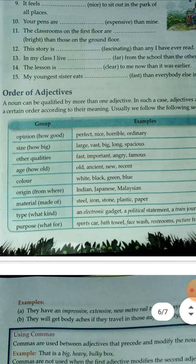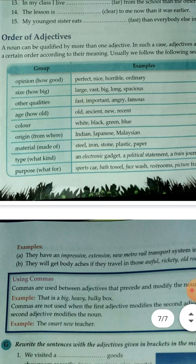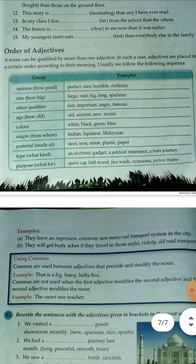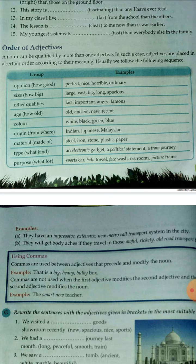The next topic is the order of adjectives — how to use adjectives when a noun takes more than one adjective. There is a certain order to follow. First comes opinion, then size, then other qualities, then age, then color, then origin, then material, then type, and finally purpose. This is the order that should be followed when writing multiple adjectives before a noun.